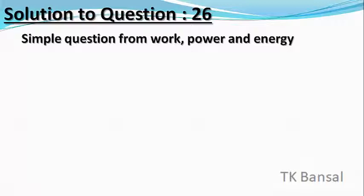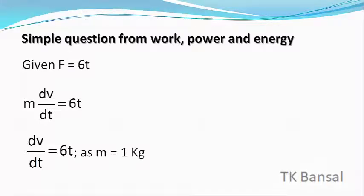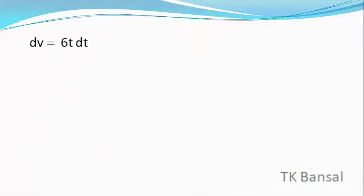Therefore we have to go on for integration. Given F equals 6t or M into dV by dt equals 6t or dV by dt equals 6t as M is equal to 1 kg or dV equals 6t dt.